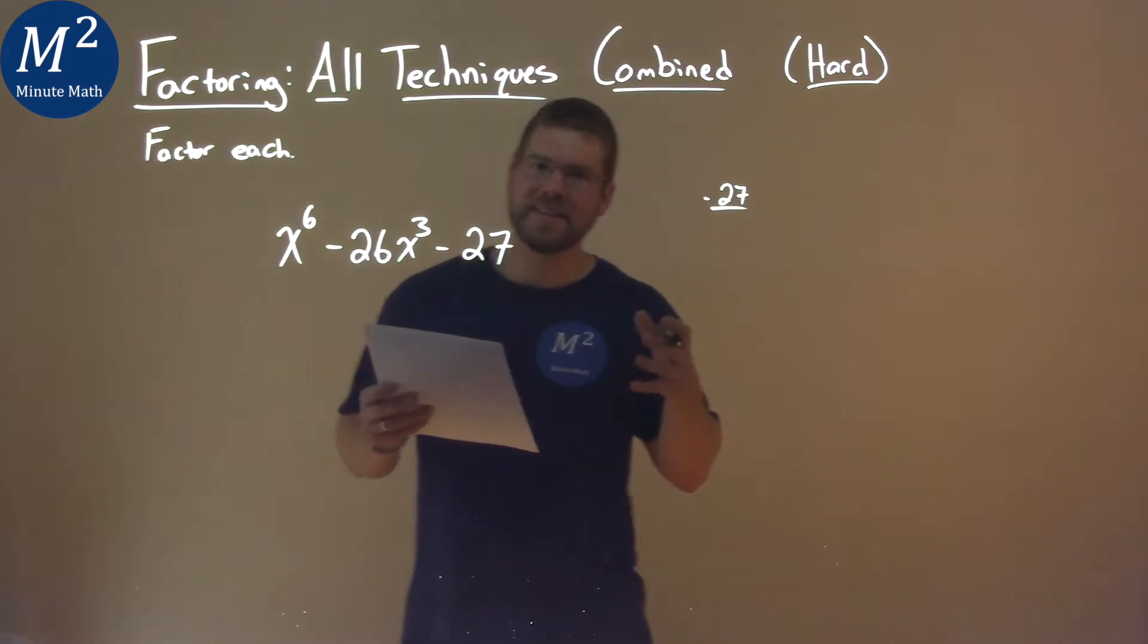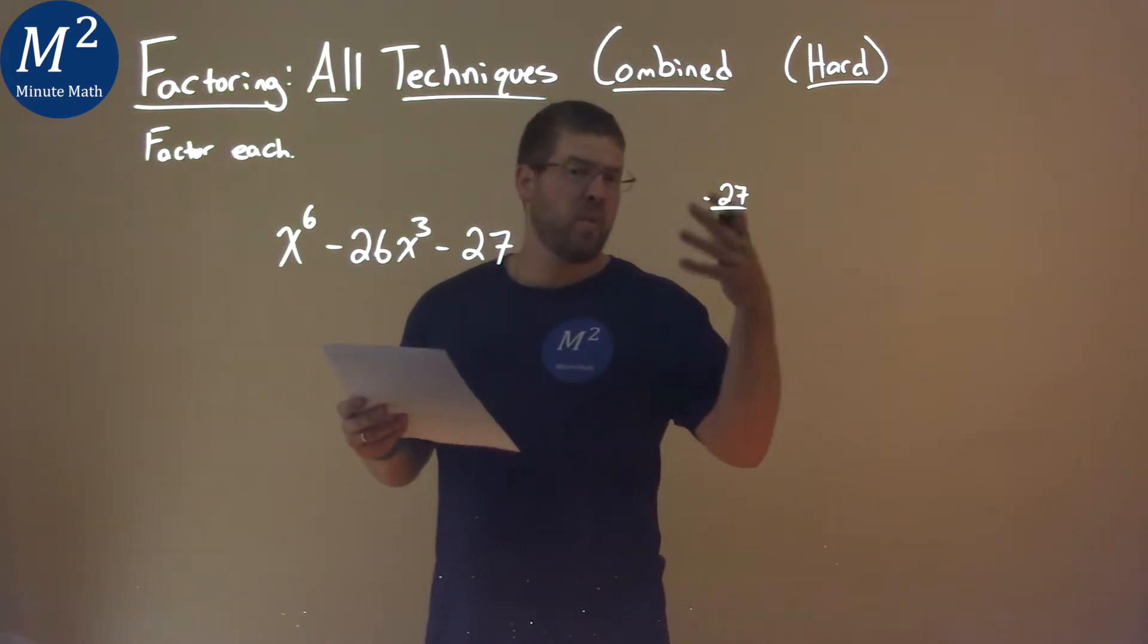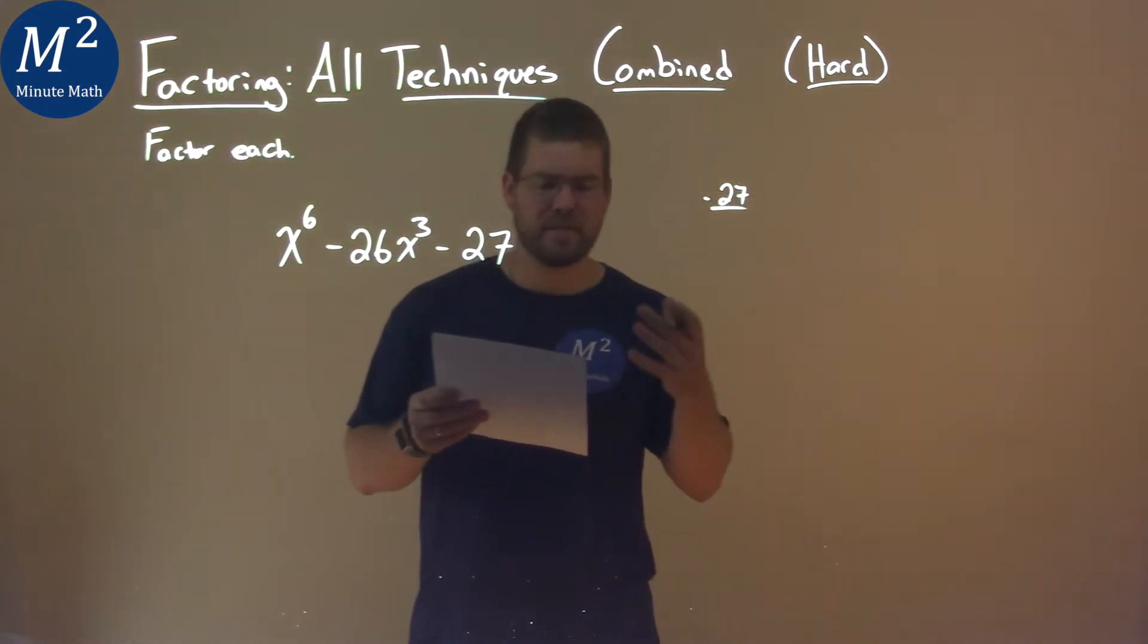So going through this, I like to kind of jump ahead. Two numbers multiplied by negative 27 are like 1 and 27, and well 27 minus 1 gets me 26. So how can we make this line up right?